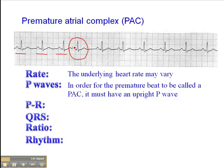You'll notice that first and foremost, it comes earlier than the next expected beat, and secondly, the P-wave morphology is also different from the underlying P-wave morphology. Those are some indications that this is a premature atrial complex. The remaining beats all appear to be sinus.